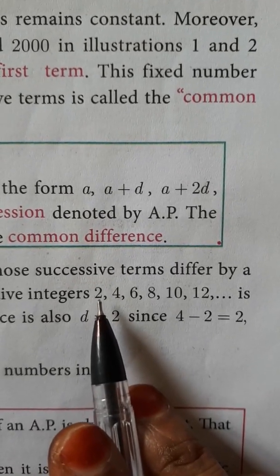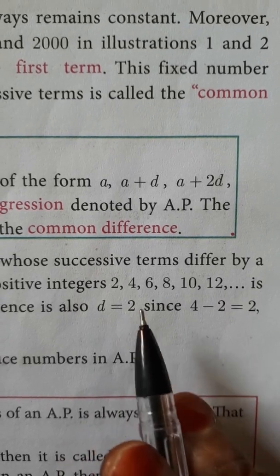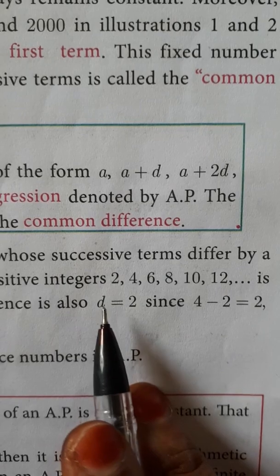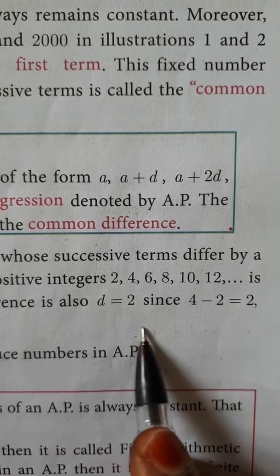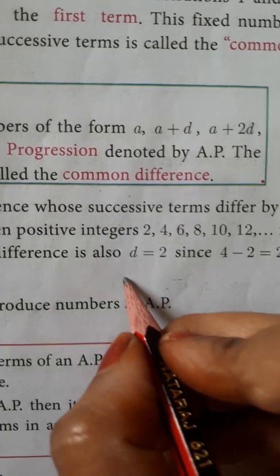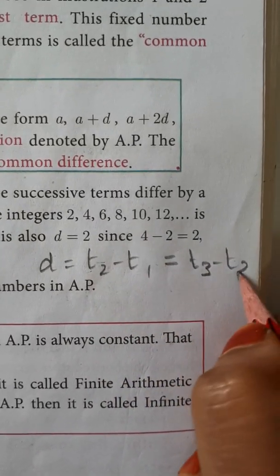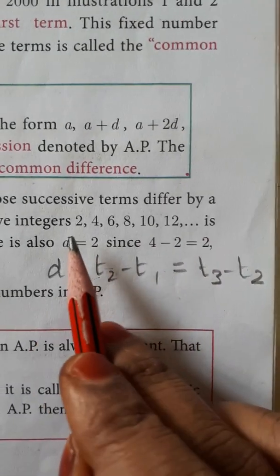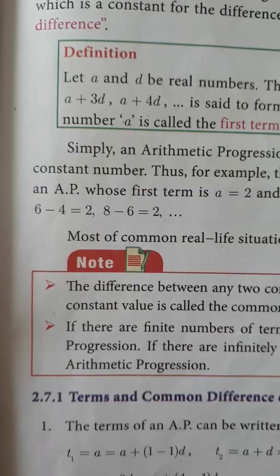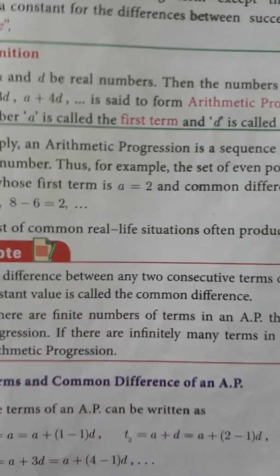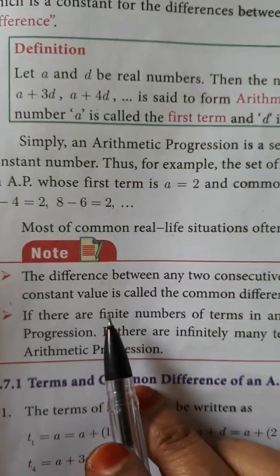The first term is 2. The common difference D is T2 minus T1, which equals T3 minus T2, which equals T4 minus T3 — and so on. The common difference is 2. The difference between any two consecutive terms of an AP is always constant, and that constant value is called the common difference.